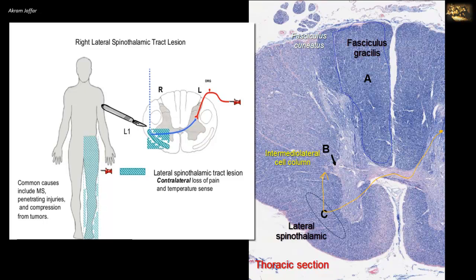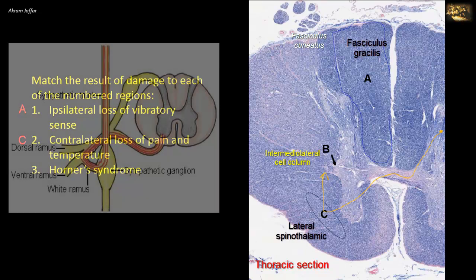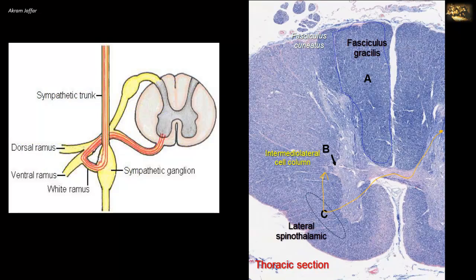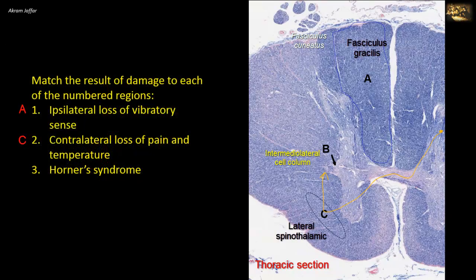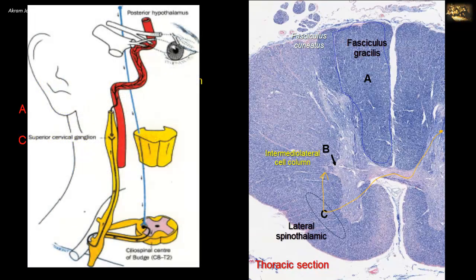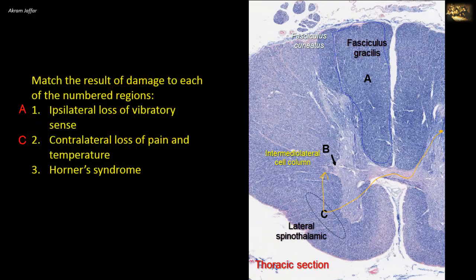B is the intermediolateral cell column, which consists of sympathetic preganglionic motor neurons. The axons exit with the ventral root of the spinal nerve and enter the sympathetic chain of ganglia via the white ramus communicans as preganglionic fibers. In the upper four thoracic segments, some preganglionic sympathetic fibers ascend to the superior cervical ganglion, where postganglionic sympathetic fibers accompany the internal carotid artery to supply structures in the head. They supply the skin with vasomotor, pilomotor, and sudomotor fibers, and in the head, they also supply the dilator pupillae muscle and the smooth muscle part of levator palpebrae superioris.